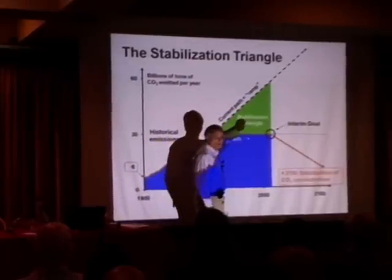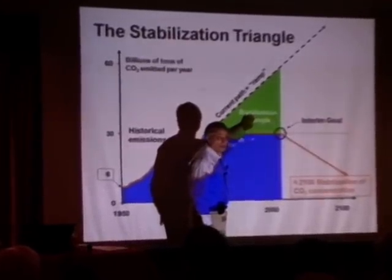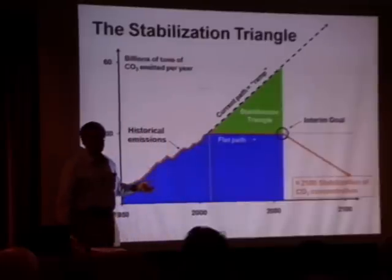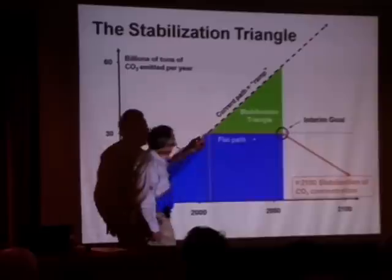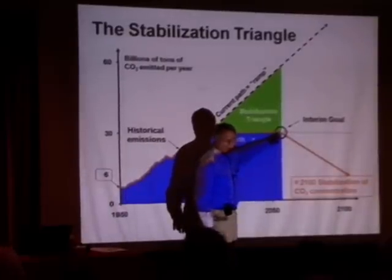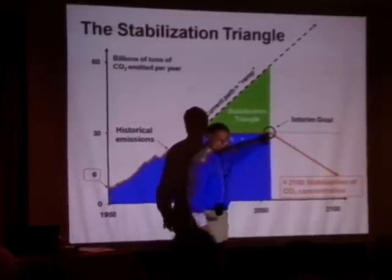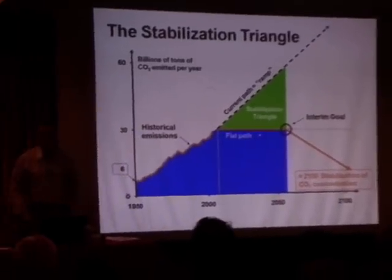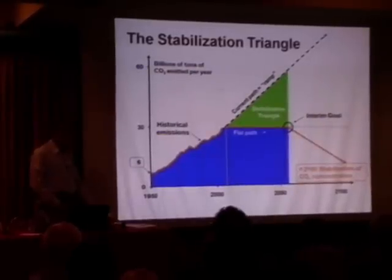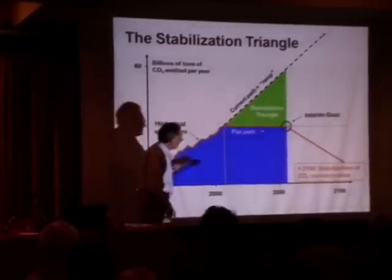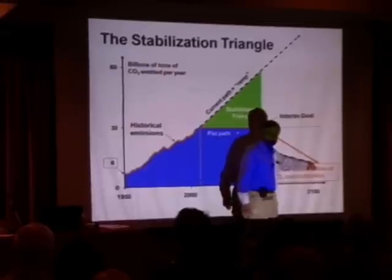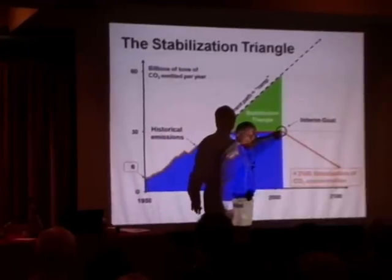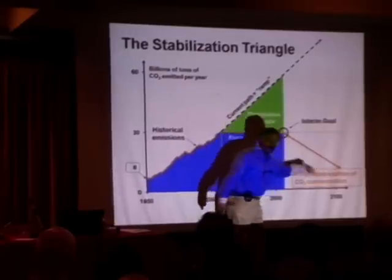The work in that triangle represents things that won't happen automatically — things that take policies, inventions, better-designed cities, all done on purpose because we care about climate change and sustainability. The flat curve doesn't get you out of trouble; you're still emitting much more than the oceans and forests can take up. So we're saying this is a 100-year job: in the second 50 years, emissions must fall far enough that nature's absorption cancels what we emit — maybe all the way to zero.